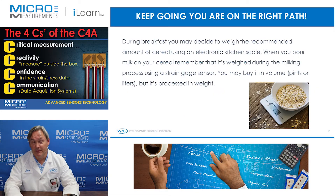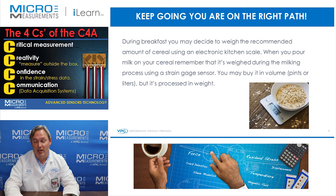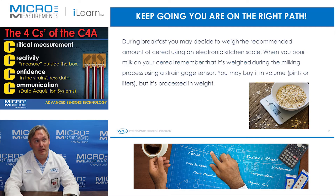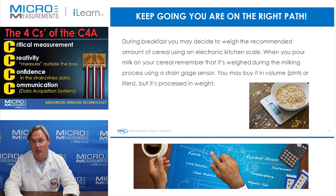What about breakfast? During breakfast you may decide to weigh the recommended amount of cereal using an electronic kitchen scale. When you pour your milk on your cereal, remember that it's weighed during the milking process using a strain gauge based sensor. You may buy it in volume — pints or liters — but it's processed by weight.